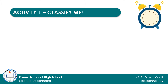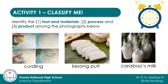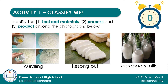And for the last set, classify curdling, quesong puti, and carabao's milk into tools or material, process, or a product. The answer is: curdling is a process, while quesong puti is a product, and carabao's milk is a tool or a material.